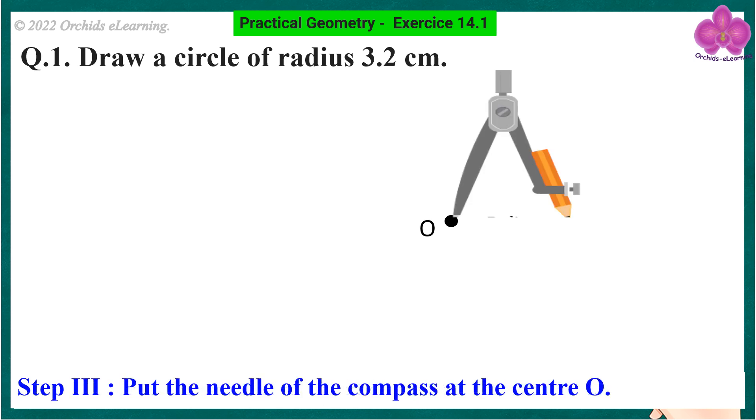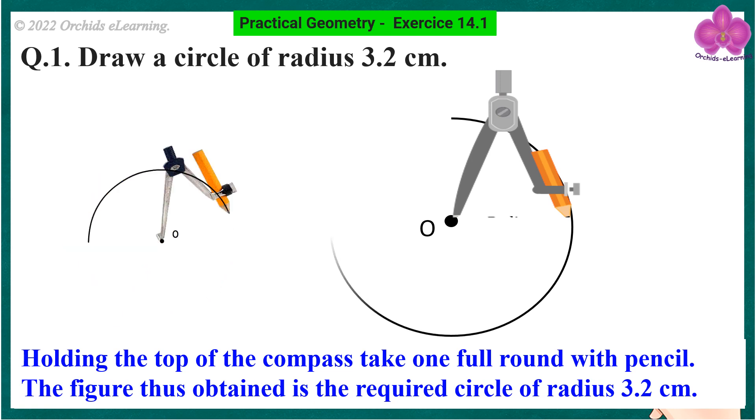Step 3: Put the needle of the compass at the center O. Holding the top of the compass, take one full round with pencil. The figure thus obtained is the required circle of radius 3.2 cm.